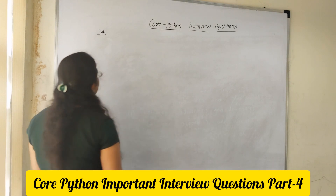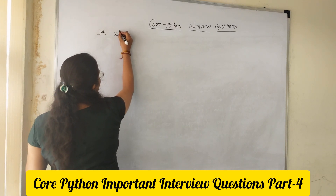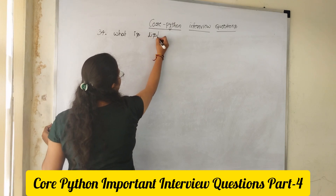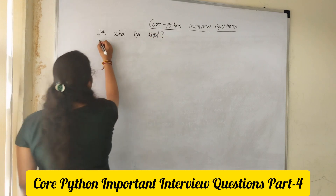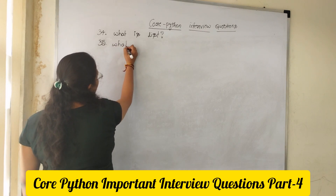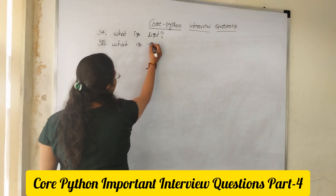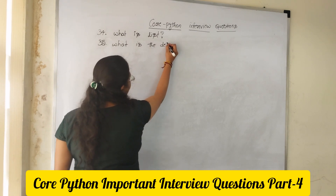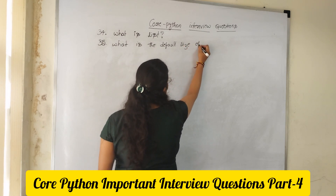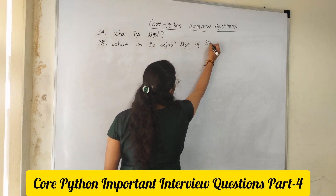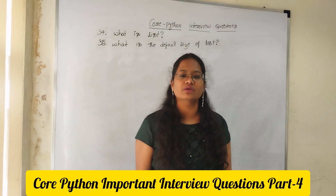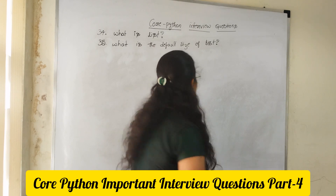Next, what is list? First of all, what is list? What is the default size of list? Most people don't know, but a list internally takes 72 bytes. How many bytes? 72 bytes.